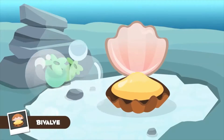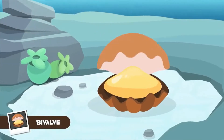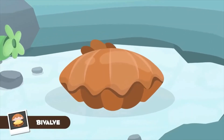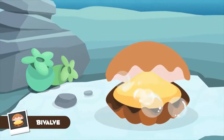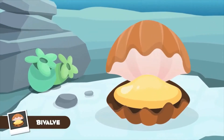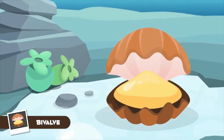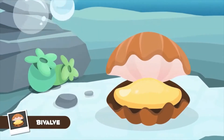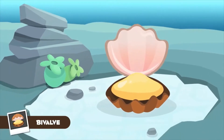We, the bivalve mollusks, have a shell which closes tightly to protect us from predators. We live in the sea and we are normally attached to rocks or sand. Clams like me belong to the bivalve mollusks group.